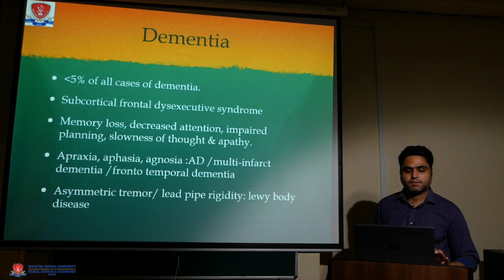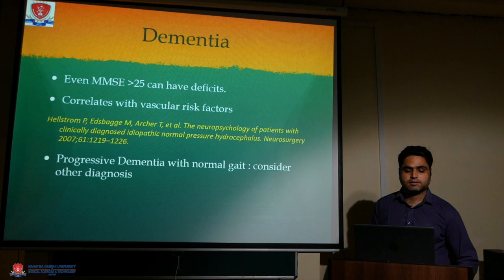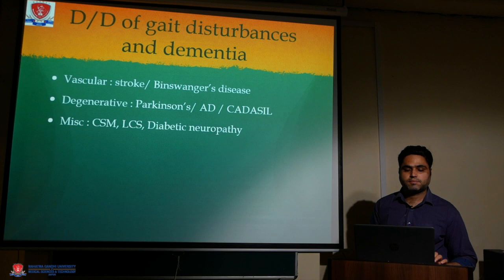White matter changes greater than 25% can have deficits correlating with vascular risk factors. Progressive dementia with normal gait should prompt consideration of other diagnoses. Differential diagnosis for gait disturbances and dementia includes: vascular causes such as stroke and Binswanger's disease; degenerative causes such as Parkinson's disease, Alzheimer's disease, and corticobasal degeneration; and miscellaneous causes including cervical spinal myelopathy, lumbar canal stenosis, and diabetic neuropathy.